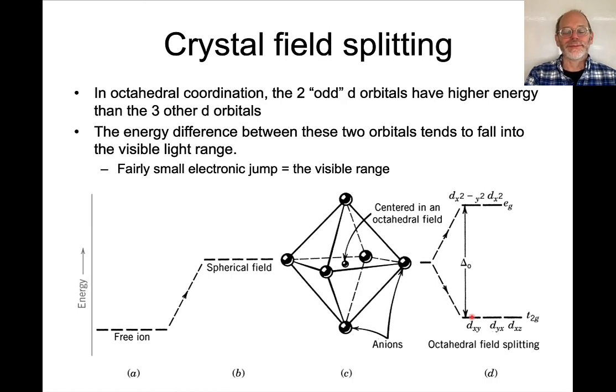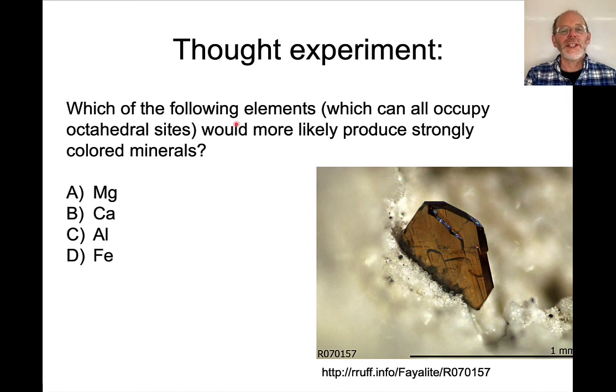This splits the energy into an electronic jump, and this jump turns out to correspond to the visible range of light. So here's a quick question. Which of the following elements, which could all be in octahedral coordination, would be more likely to produce strongly colored minerals?